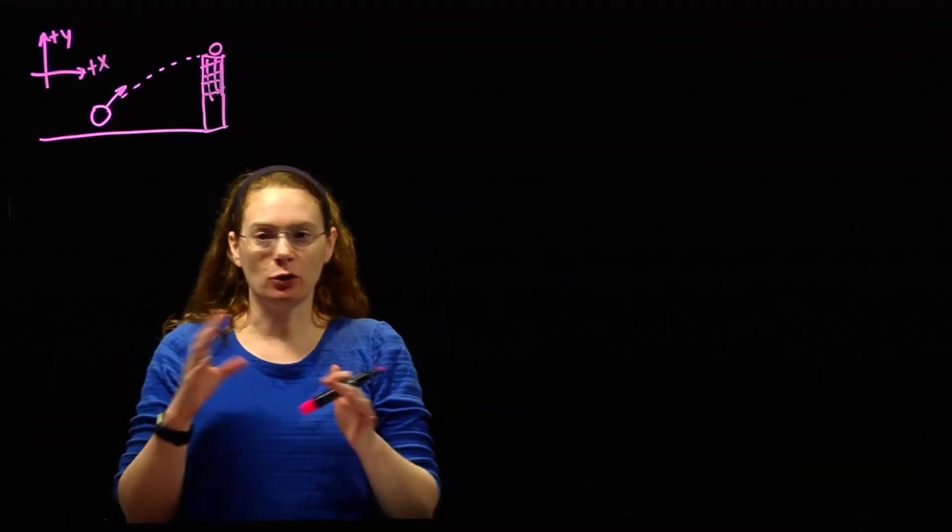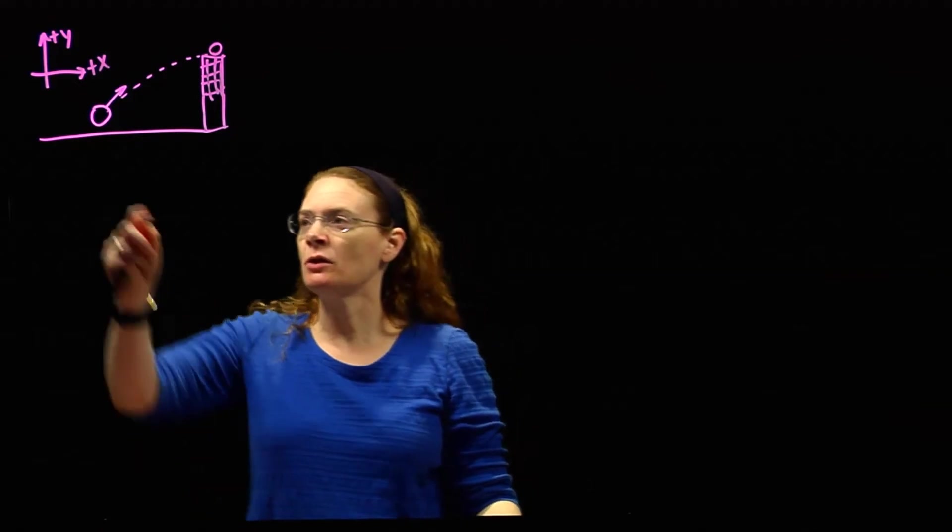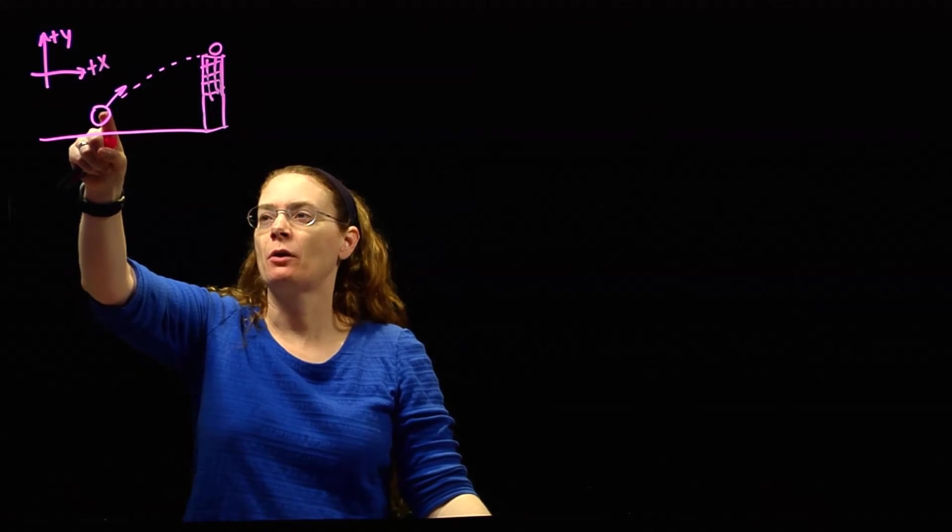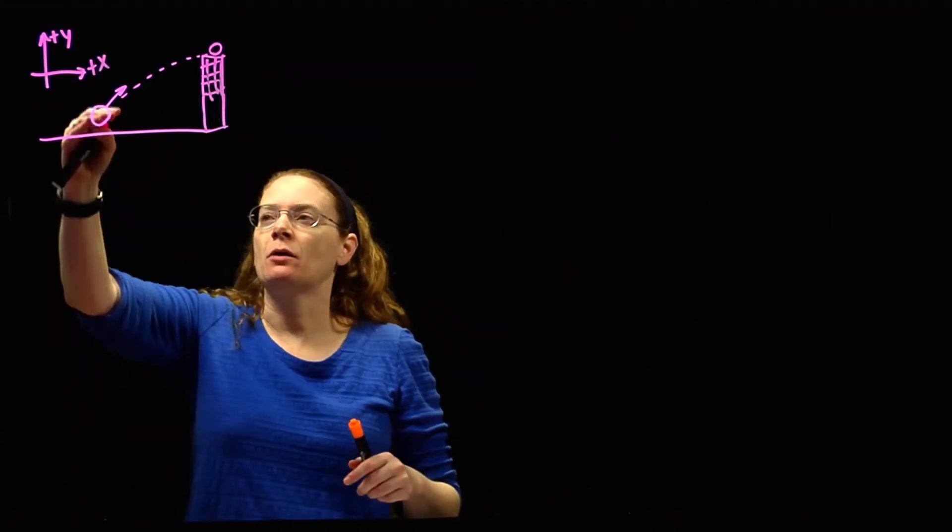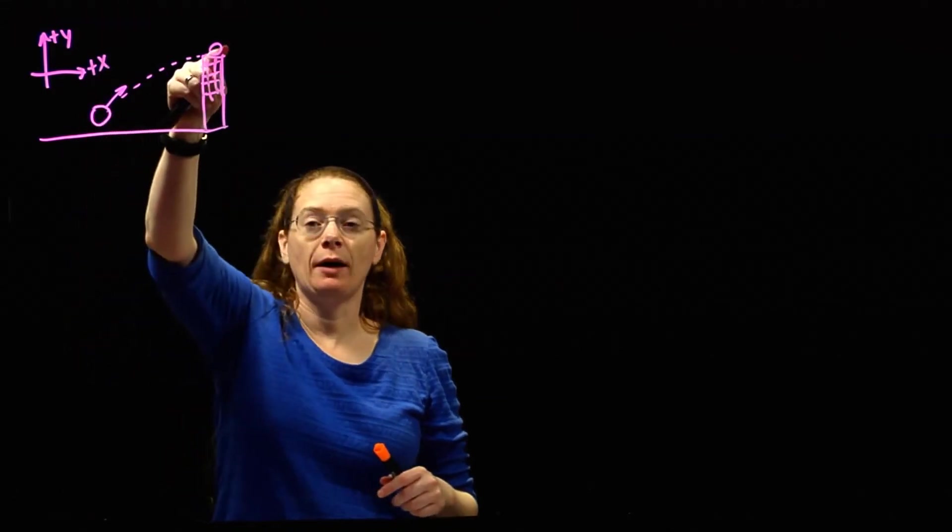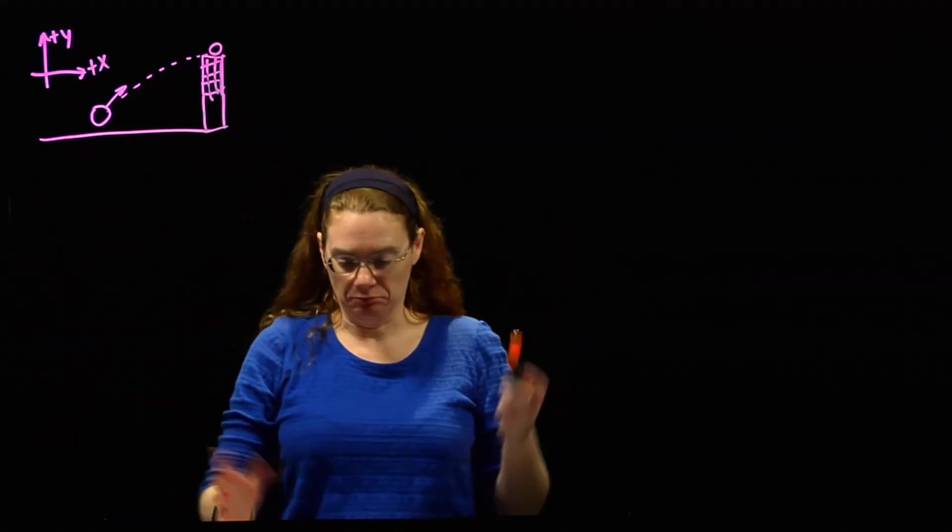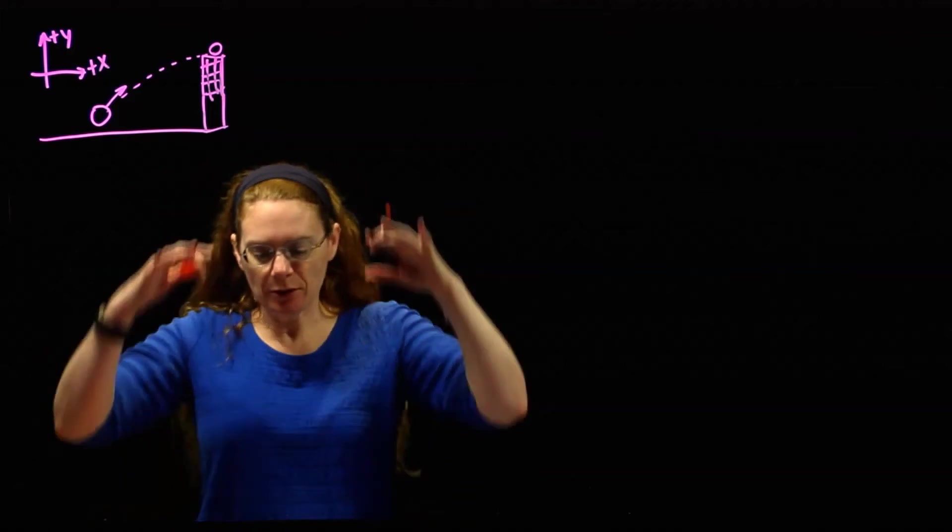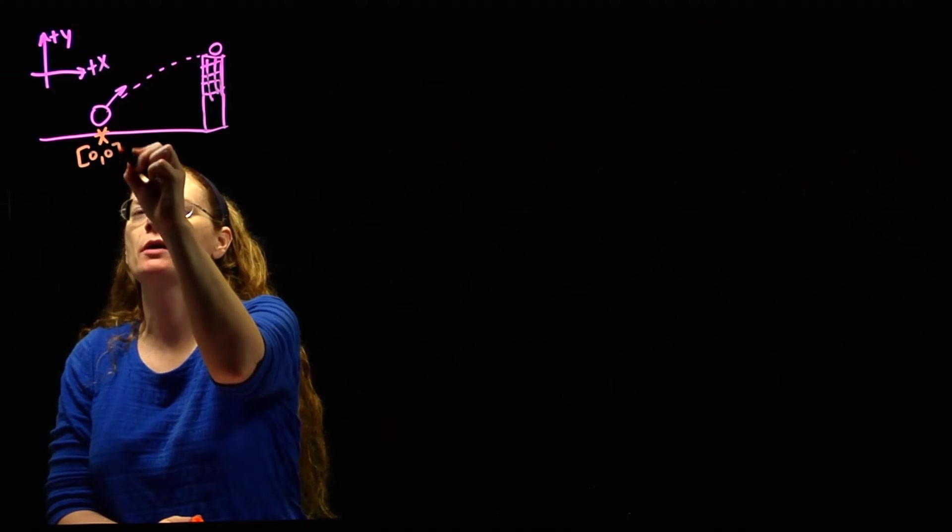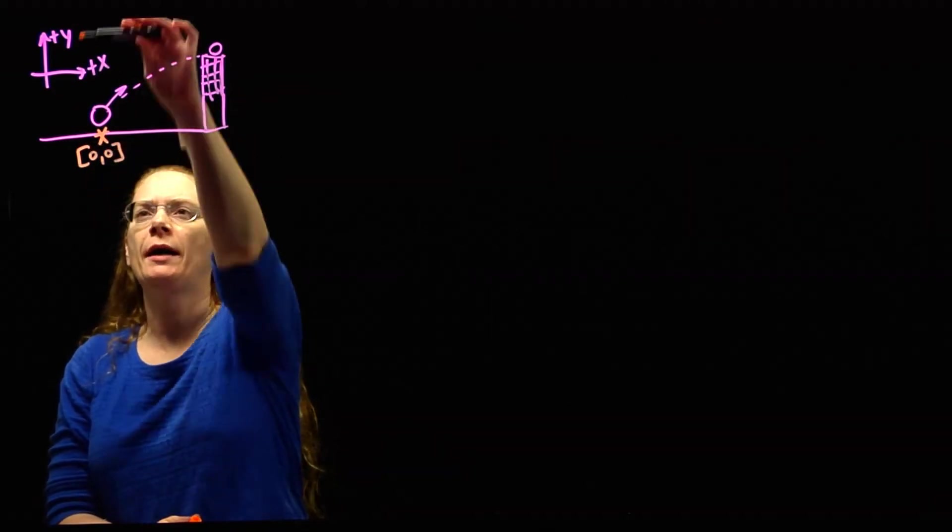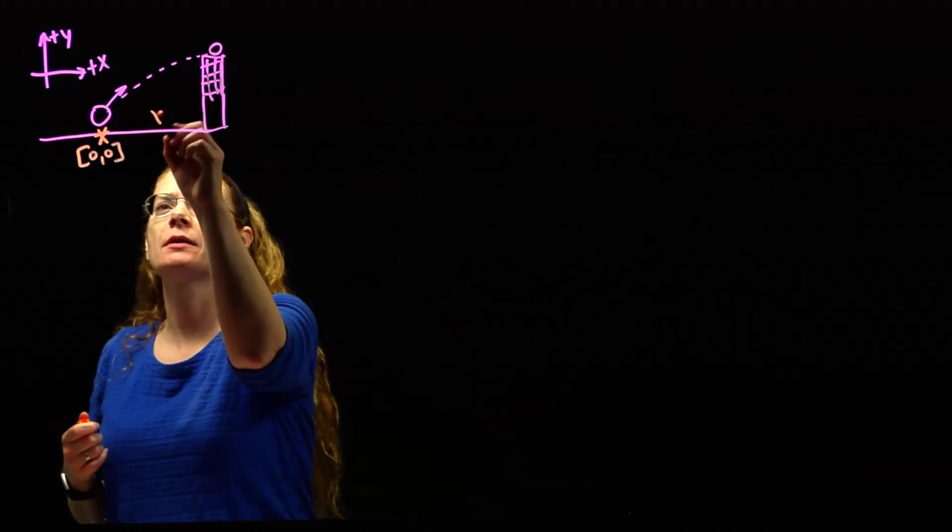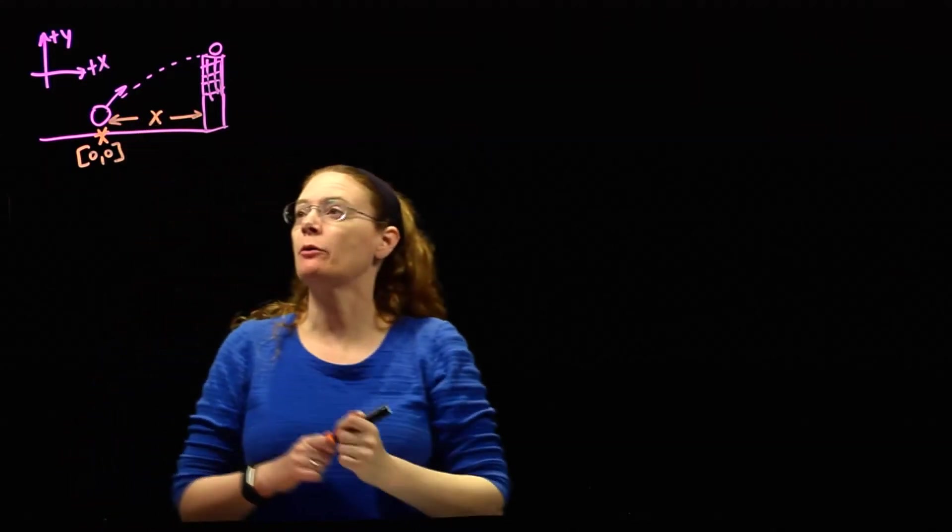Then we need to choose an origin. With these we often have different choices that make sense. We could choose the origin to be right where the ball starts, or on the floor where the ball starts horizontally, or where it ends. I like using the lowest possible place as my origin, so I'm going to choose my origin to be right here. That's my 0,0 point. And we want to know what this distance is, how far away from the net was it when it was hit.